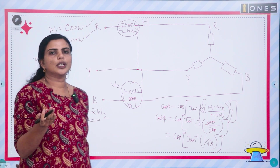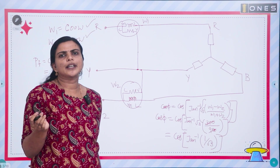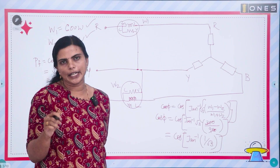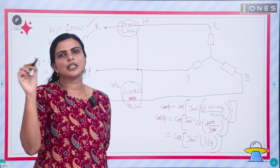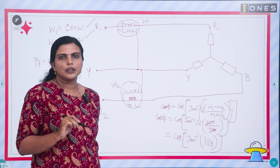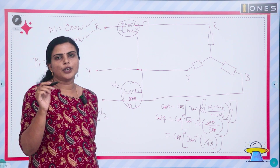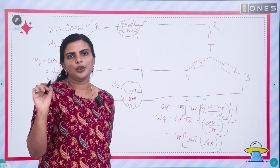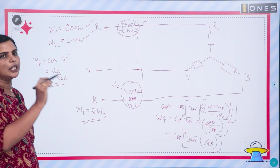If the question asks what the wattmeter readings will be when the power factor is 0.866, the options will include combinations such as 100W and 300W, 300W and 400W, 100W and 200W, and 300W and 600W. You should go for the pair where one reading is double the other — for example, 100W and 200W, or 300W and 600W.